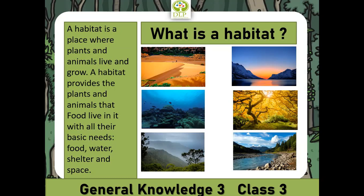What is a habitat? A habitat is a place where plants and animals live and grow. A habitat provides the plants and animals that live in it with all their basic needs, like food, water, shelter, and space.